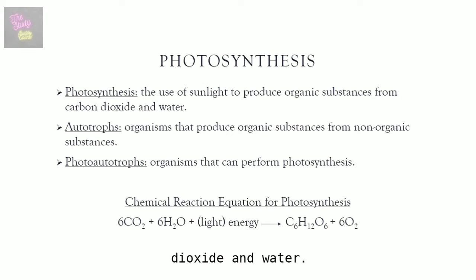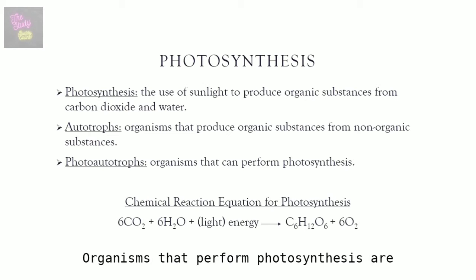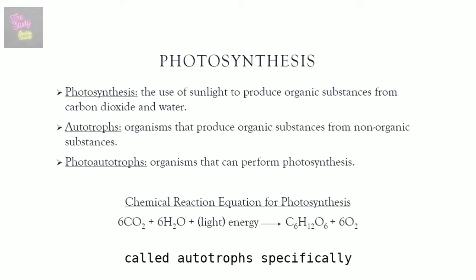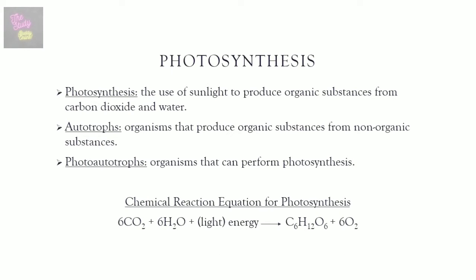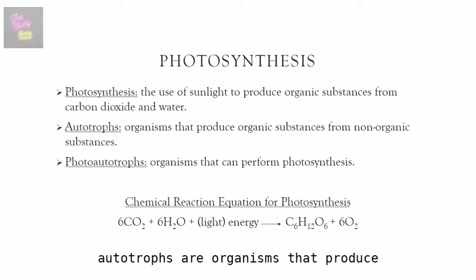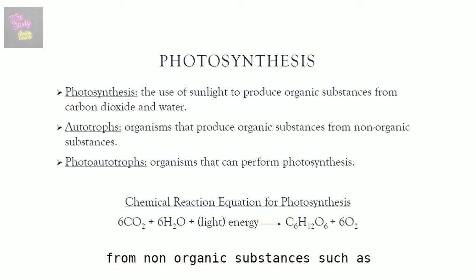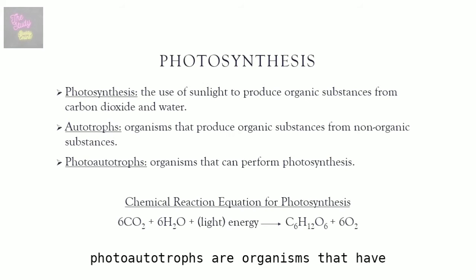Photosynthesis involves the use of sunlight as a source of energy to produce organic substances from carbon dioxide and water. Organisms that perform photosynthesis are called autotrophs, specifically photoautotrophs. Autotrophs are organisms that produce organic substances such as glucose from inorganic substances such as carbon dioxide, whereas photoautotrophs are organisms that have the ability to perform photosynthesis.